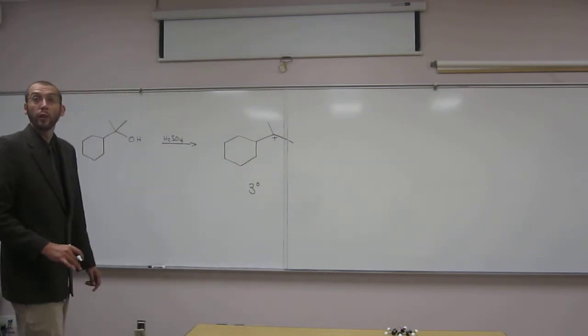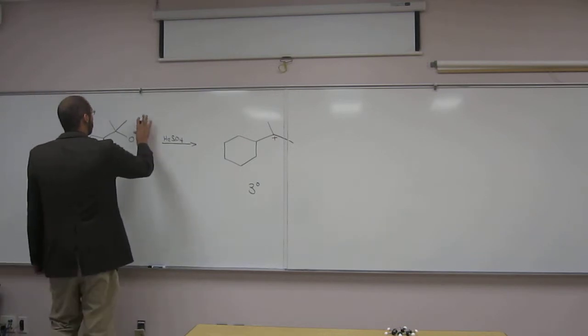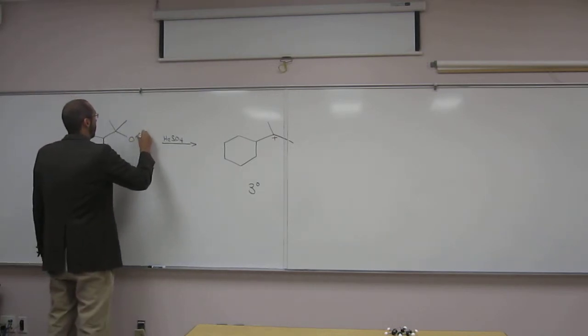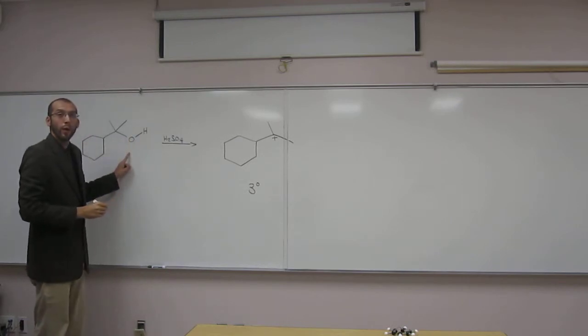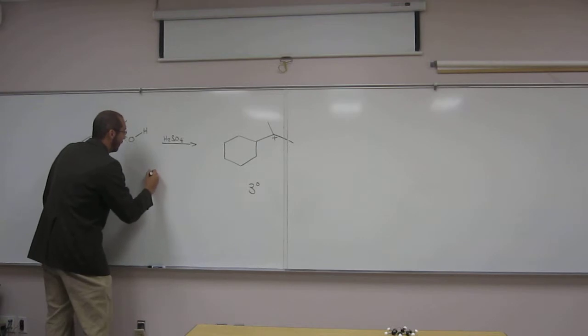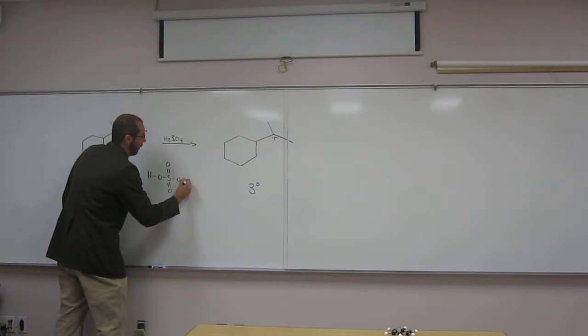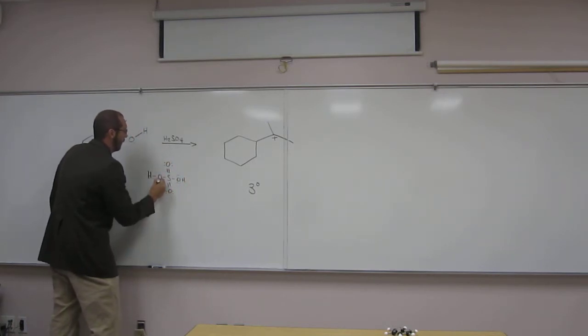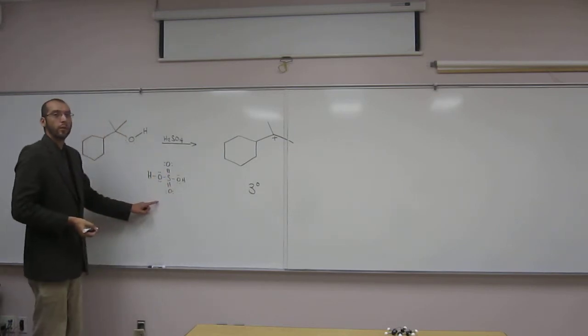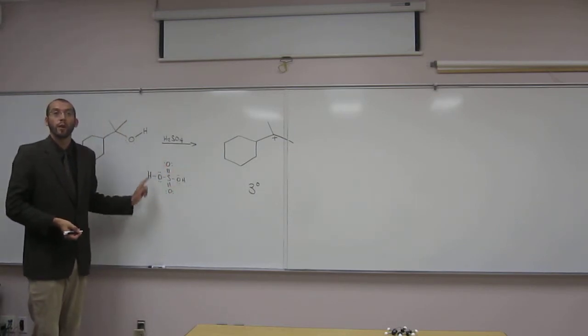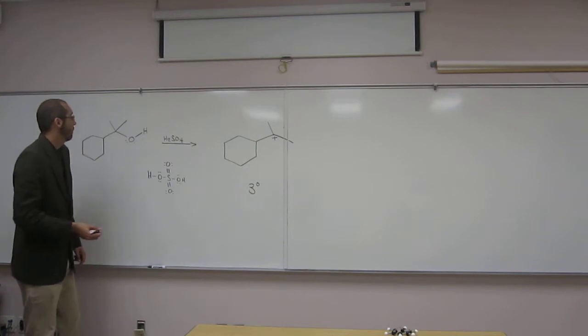Let's draw the mechanism really quick to get to that intermediate. Remember when drawing mechanisms, write your lone pairs. Draw your bonds out. It really helps. If you're having a hard time remembering the Lewis structure of sulfuric acid, memorize it. It's a good one to memorize.